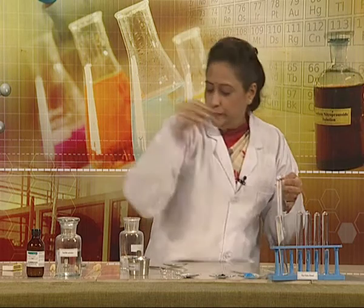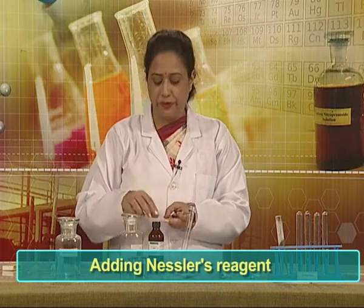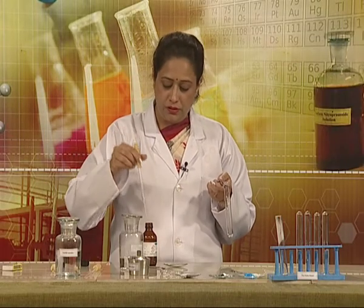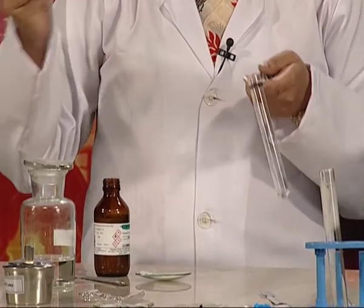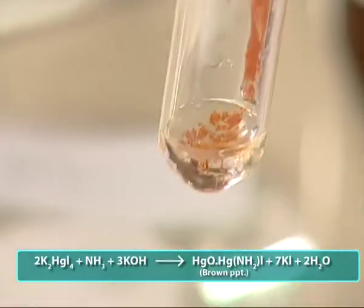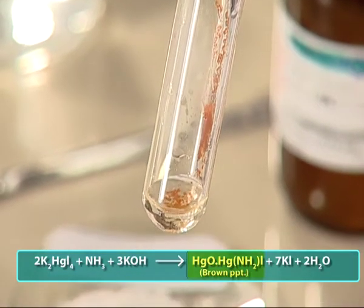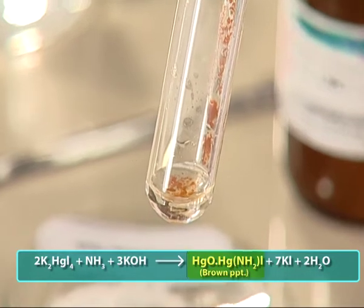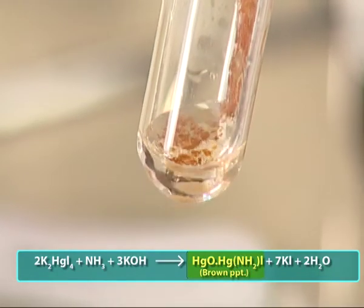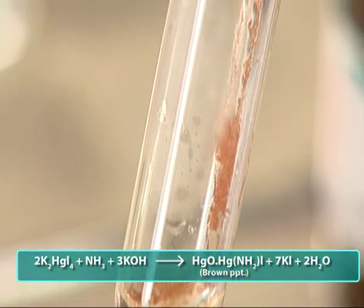In the same test tube, we can add Nessler's reagent to perform the other confirmatory test. Nessler's reagent has the formula K₂HgI₄. When we pour 1 to 2 drops of Nessler's reagent, we see the formation of a brown precipitate or coloration, which is due to the formation of a complex commonly known as Millon's base — the basic mercury amido iodine complex.